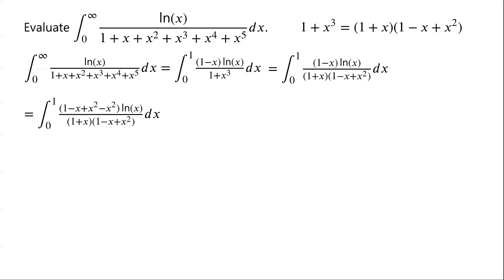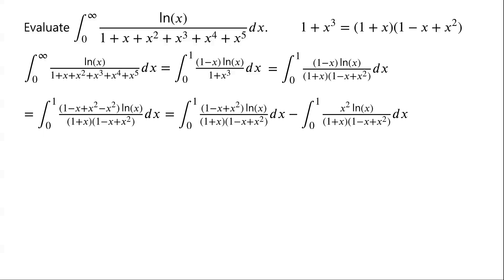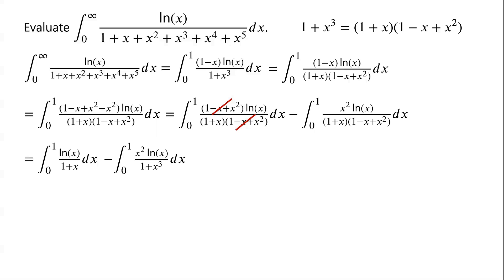So we write this as the integral from 0 to 1 of (1 minus x plus x²) times ln(x) over (1 plus x)(1 minus x plus x²) dx, minus the integral from 0 to 1 of x² times ln(x) over (1 plus x)(1 minus x plus x²) dx. In the first integral, (1 minus x plus x²) in the numerator and denominator cancel, giving the integral from 0 to 1 of ln(x) over (1 plus x) dx. In the second integral, the denominator equals (1 plus x³), so we have minus the integral from 0 to 1 of x² times ln(x) over (1 plus x³) dx.